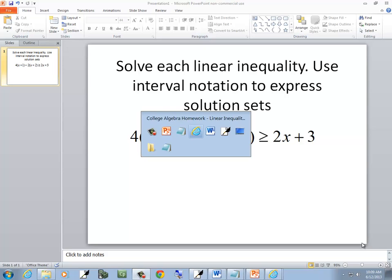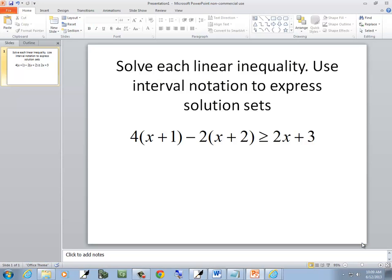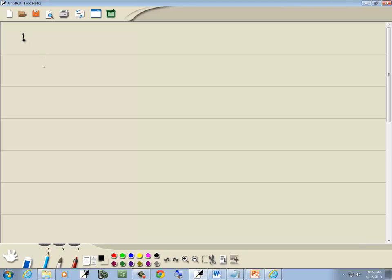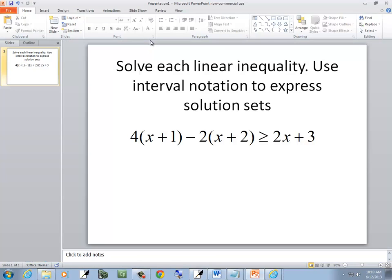Let's solve this linear inequality. We've got 4 times x plus 1 minus 2 times x plus 2 is greater than or equal to 2x plus 3.